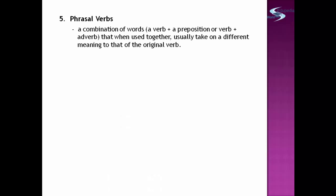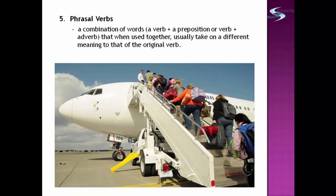The fifth type is phrasal verbs. These are a combination of words — a verb plus a preposition, or a verb plus an adverb — that when used together usually take on a different meaning from the original verb. For example: 'It's time to get on the plane.' Here, 'get' is the verb and 'on' is the preposition, forming the phrasal verb 'get on.'